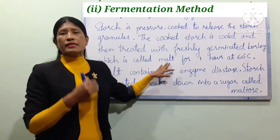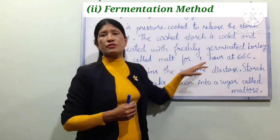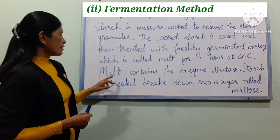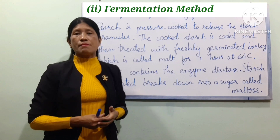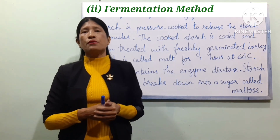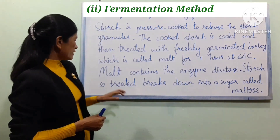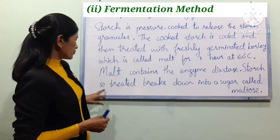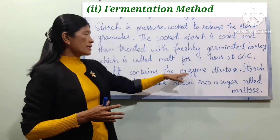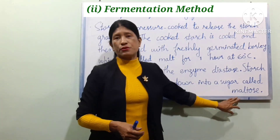The starch granule is heated for one hour at 60 degrees Celsius. Malt contains the enzyme diastase. Enzyme diastase breaks the starch down into a sugar called maltose.